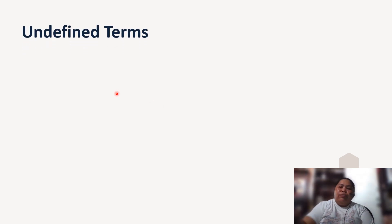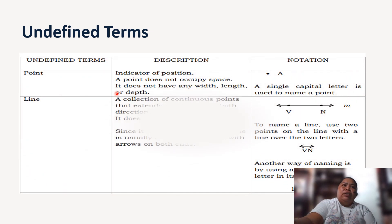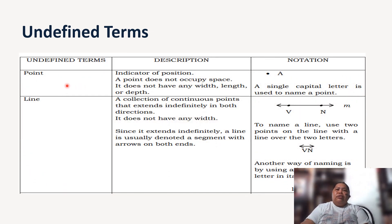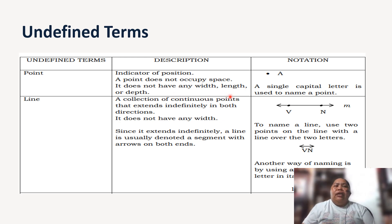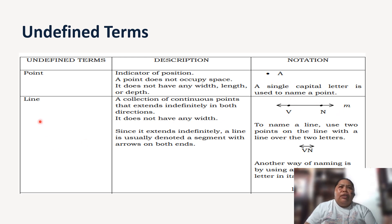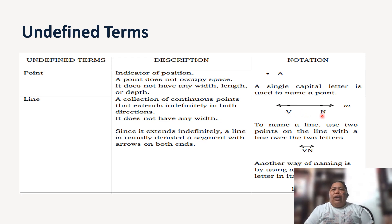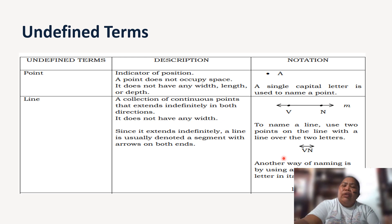We have undefined terms. First, we have a point. A point does not occupy space; it does not have width, length, or depth. An example is point E — a single capital letter is used to name a point. Then we have a line — a collection of continuous points that extends indefinitely in both directions. We have line M, or we can also call it line VN, denoted by arrows on both sides.